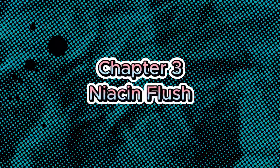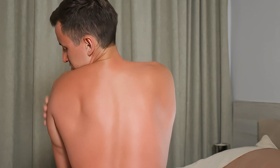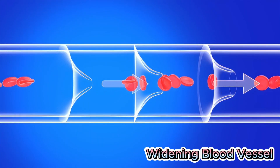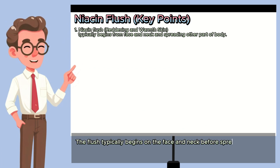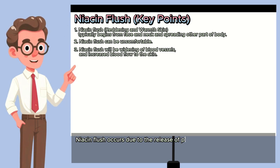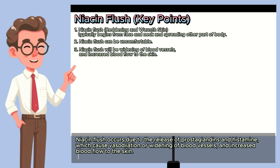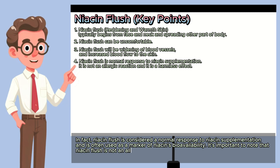Chapter 3: Niacin Flush. Niacin flush is a common side effect experienced by some individuals when taking niacin supplements. It is characterized by a temporary reddening of the skin, often accompanied by sensations of warmth, itching, and tingling. The flush typically begins on the face and neck before spreading to other parts of the body, such as the chest and arms. While niacin flush can be uncomfortable, it is generally considered harmless and transient. Niacin flush occurs due to the release of prostaglandins and histamine, which cause vasodilation — widening of blood vessels — and increased blood flow to the skin. In fact, niacin flush is considered a normal response to niacin supplementation and is often used as a marker of niacin's bioavailability. It is not an allergic reaction and does not indicate an adverse event.